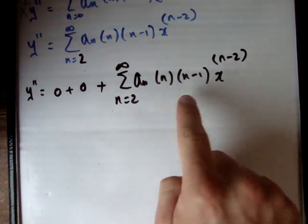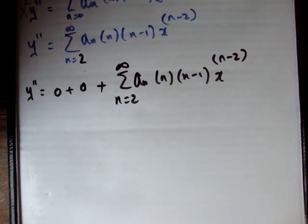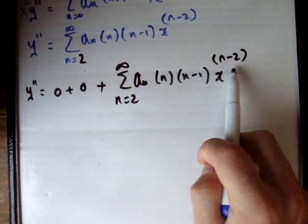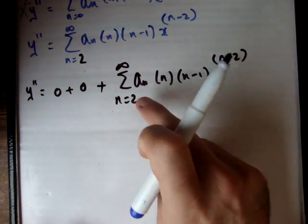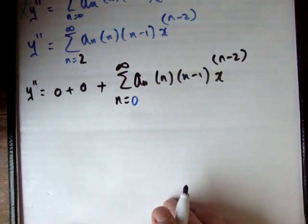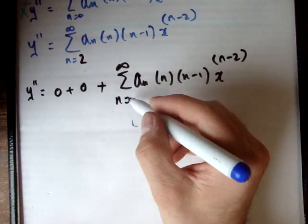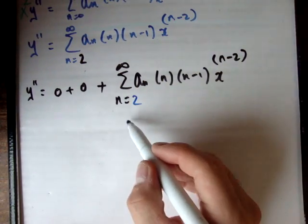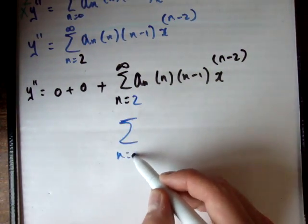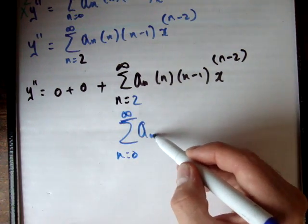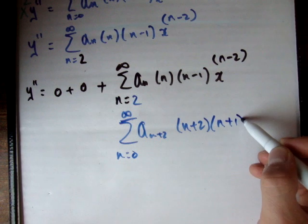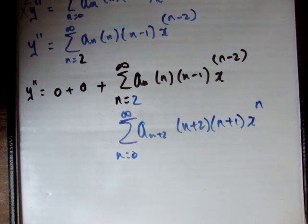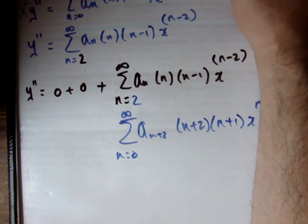We need now to manipulate this. The way we do it is we increase all the n terms here by 2, and we decrease this index term by 2, so this becomes n equals 0. As a result, the whole thing becomes the sum from n equals 0 to infinity of a sub n plus 2 times n plus 2 times n plus 1 times x to the n. And that is equal to y double prime.